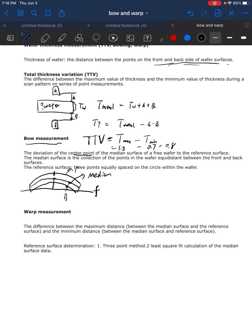For example, in this wafer we can simply get the bow as the distance from here to here, which let's say will be 1.5 micrometers.